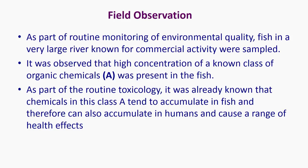Chemical A was already known through the process of toxicology — all properties of A were known — and it was found to be present in concentrations that were unacceptable for quality. This stresses the importance of routine monitoring of natural systems: in the presence of anthropogenic sources, it is always possible that a particular chemical can enter the environment. This is an illustration of why routine monitoring and sensing of pollutants is important.